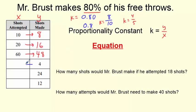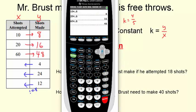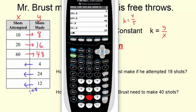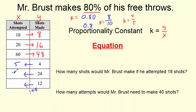What happens if I give you how many shots he made and I want to know how many he tried? When I go backwards, we're not going to multiply by 0.8 — we are going to divide by 0.8. So 4 divided by 0.8 gives 5 attempts. 24 divided by 0.8 gives 30. And the last one gives 15. So I make 4 out of 5 shots, 24 out of 30, 12 out of 15 — just like 8 out of 10. When I have X I multiply by 0.8; the other way I divide by 0.8.